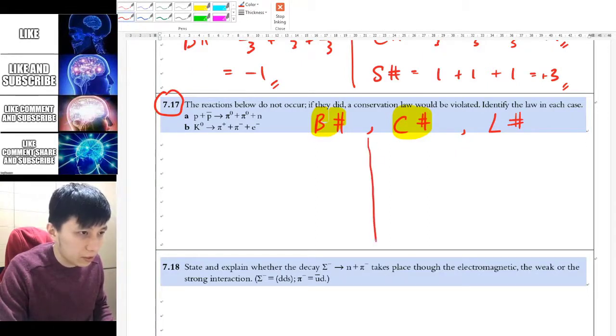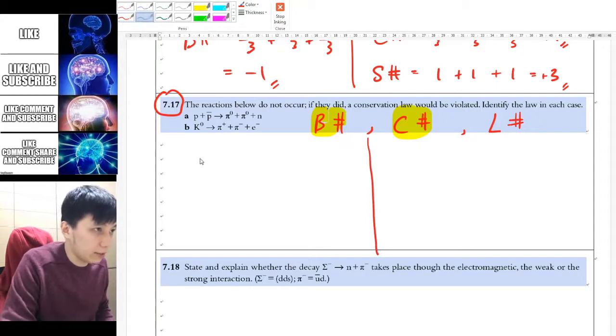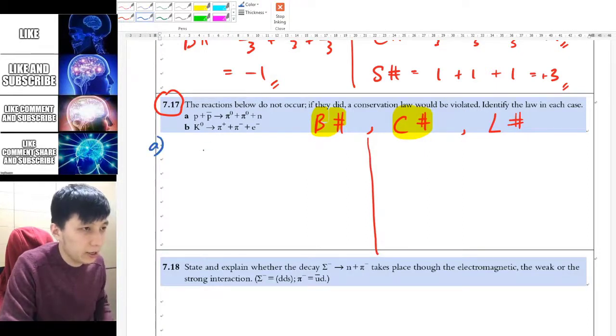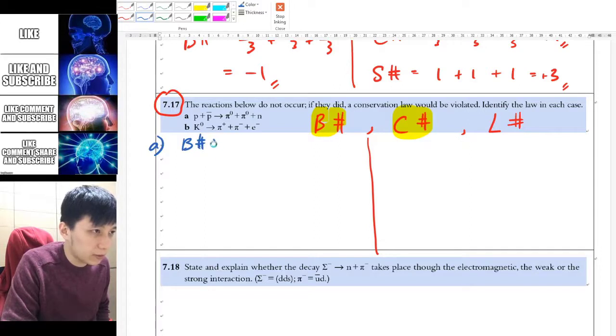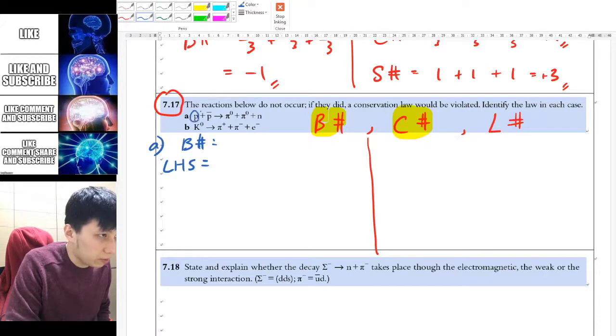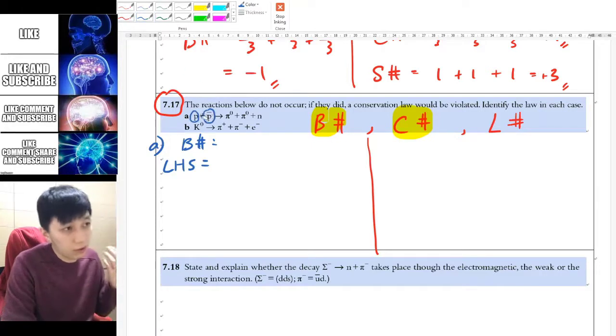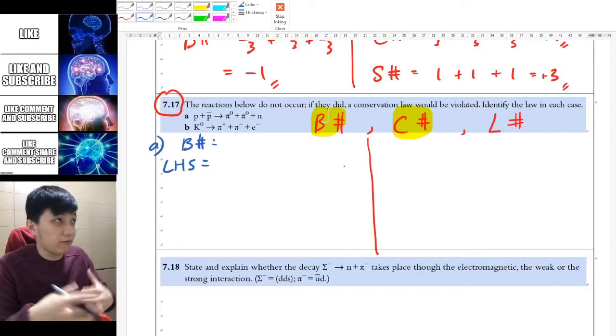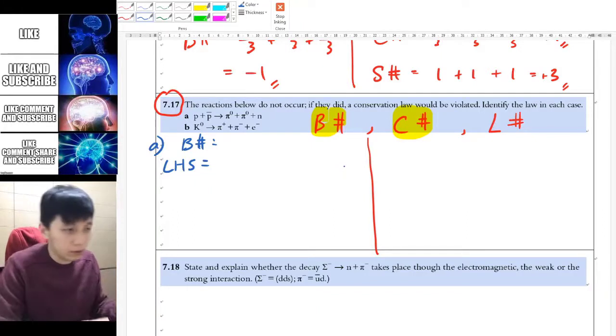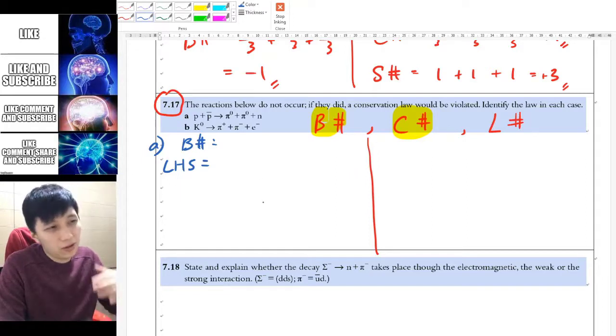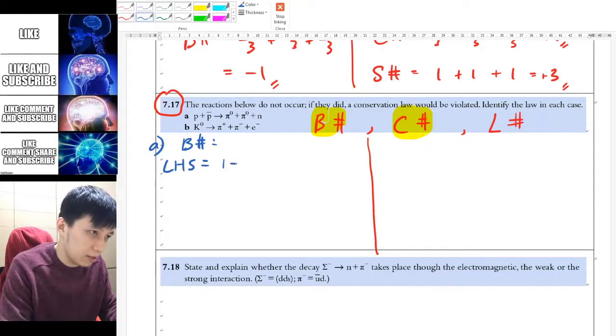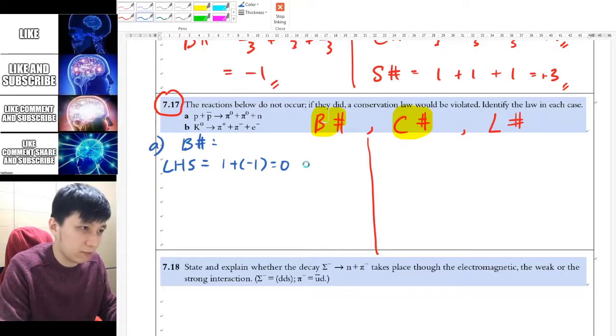For easier representation, I'll split this space into two, and I'll do part A here. Let's do baryon number first. For left-hand side, the baryon number is proton and antiproton. Proton and antiproton each have 1 and negative 1, or even if you don't know any of them, it's going to be canceled anyway. So that must be 0 at the end. I'll put down 1 plus negative 1, that gives 0.